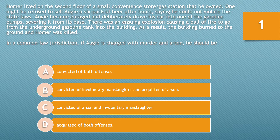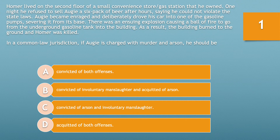As a result, the building burned to the ground and Homer was killed. In a common law jurisdiction, if Augie is charged with murder and arson, he should be: A. Convicted of both offenses. B. Convicted of involuntary manslaughter and acquitted of arson. C. Convicted of arson and involuntary manslaughter. Or D. Acquitted of both offenses. Take 10 seconds to choose the best option.